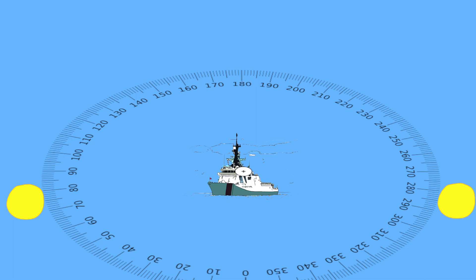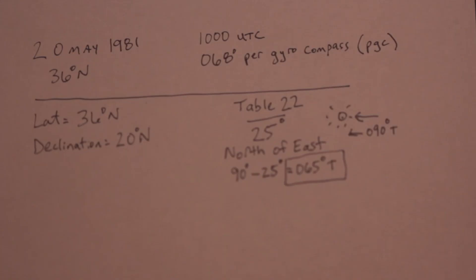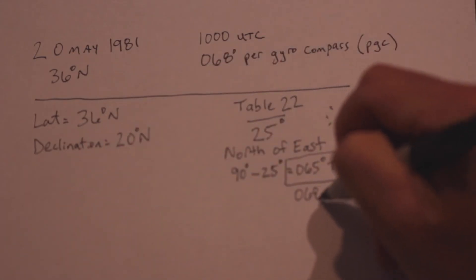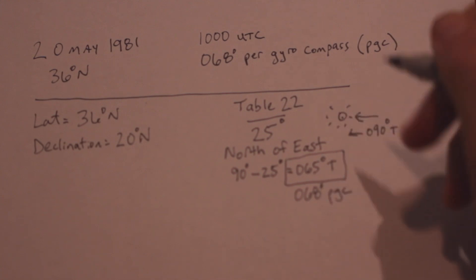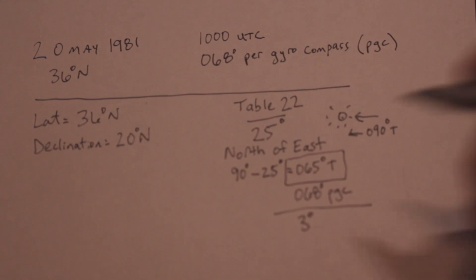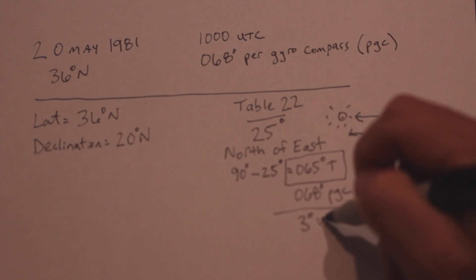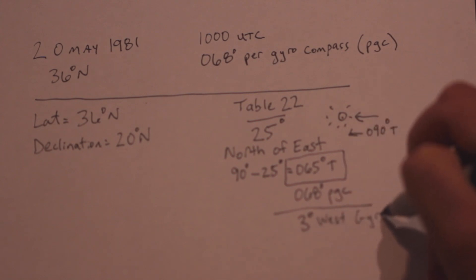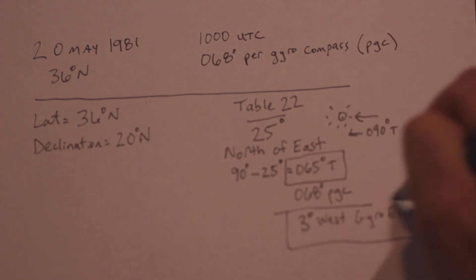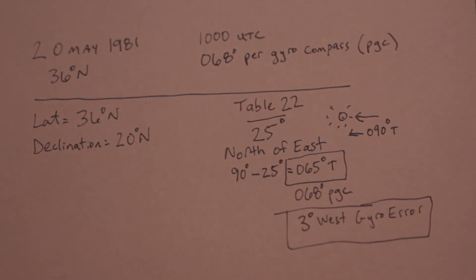Back to our problem: we calculated the bearing to sunrise at 065 degrees true, but we measured it at 068 degrees per gyro compass. The gyro error is clearly three degrees. Is it three degrees east or three degrees west? It's west — remember, gyro best, error west. That's the basic process for amplitude calculations, and it applies to the sun, the moon, the planets, and the stars equally well, making it a pretty powerful tool.